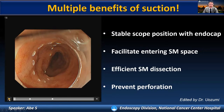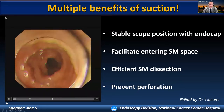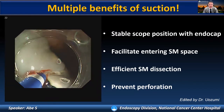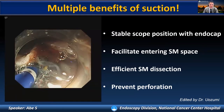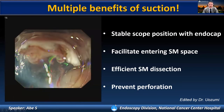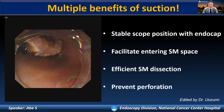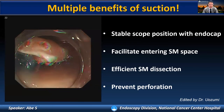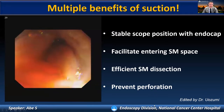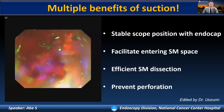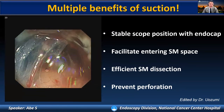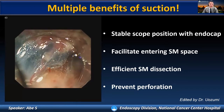Here you will see an esophageal ESD case after marking. In this case, we actually use an Aura's pluronifeknife. During mucosal incision, less air insufflation helps us get the stable scope position with the endoscopic cap. In the standard air condition, it is very challenging to enter the submucosal space because of the thin and extended submucosal space. When we suction air, minimum air inflation allows for entering the submucosal, and this low air condition greatly contributes to efficient submucosal dissection and preventing perforation.